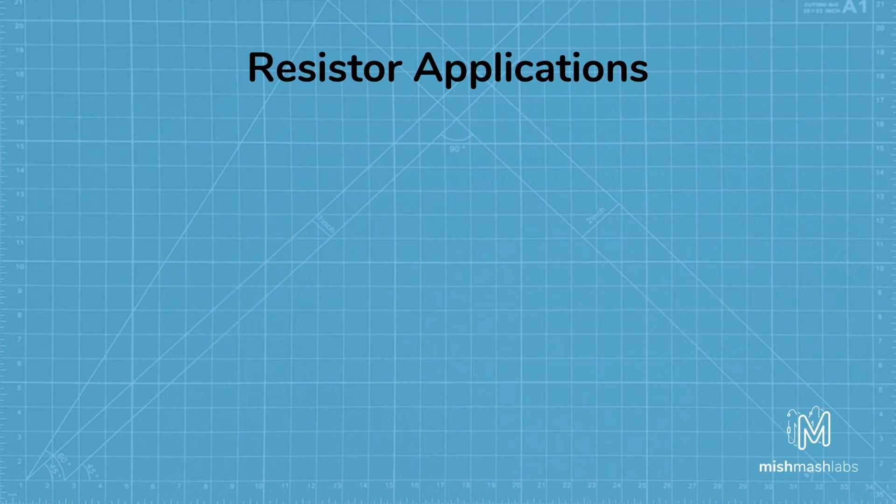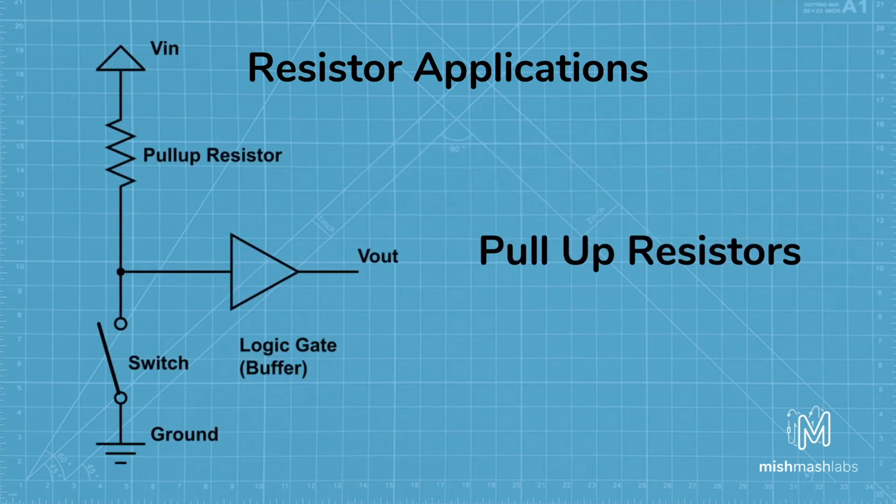The final application I have for you are pull up resistors. A pull up resistor is used when you need to bias a microcontroller's input to a known state. One end of the resistor is connected to the input pin, and the other end is connected to a high voltage, usually 5 or 3 volts.